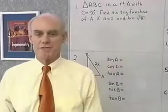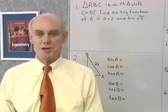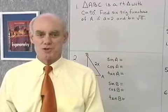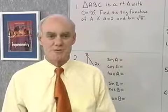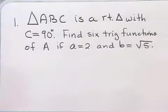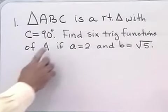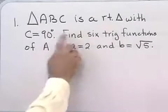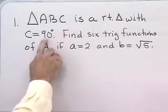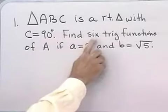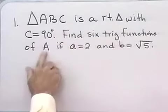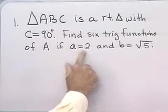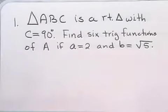We want to use our second definition for the trigonometric functions to work some problems. Our first one involves a right triangle. Triangle ABC is a right triangle with C equal to 90 degrees. Find the six trigonometric functions of angle A if side a is 2 and side b is square root of 5.